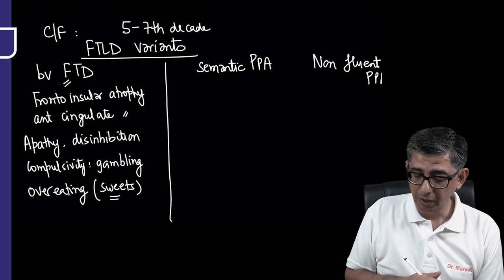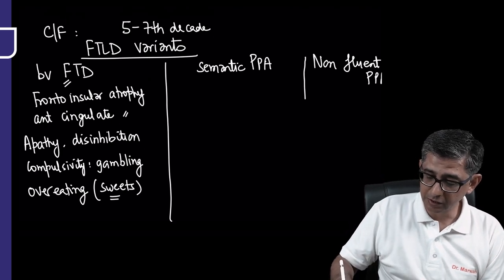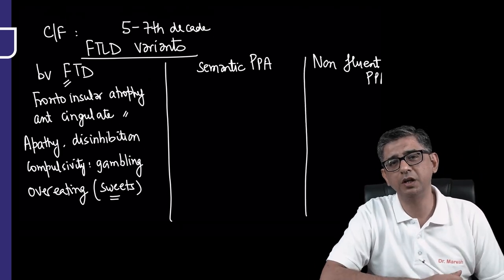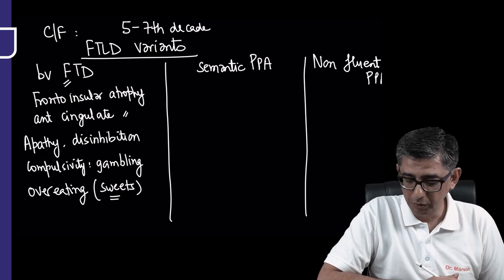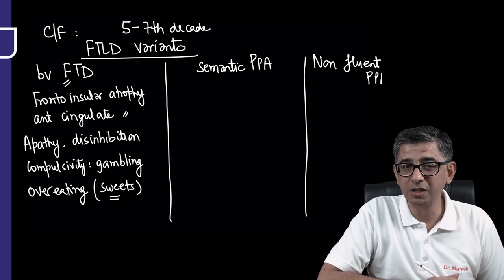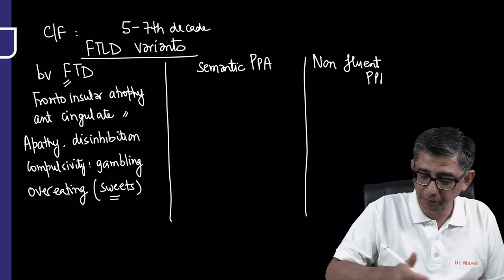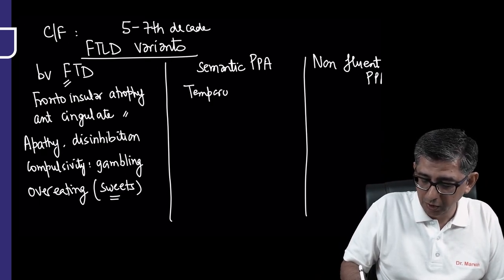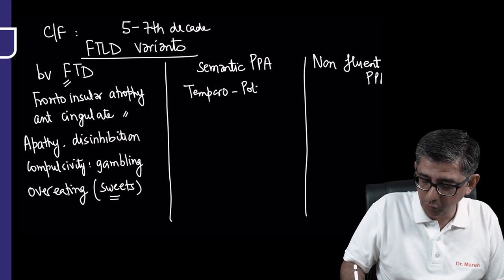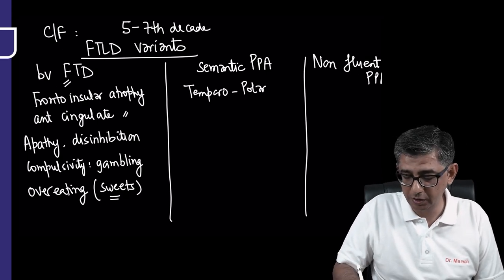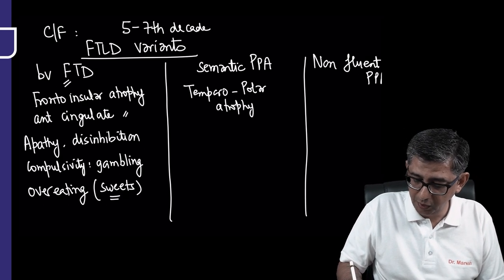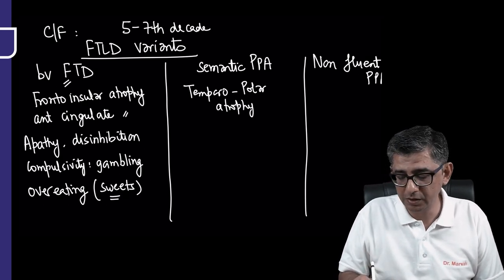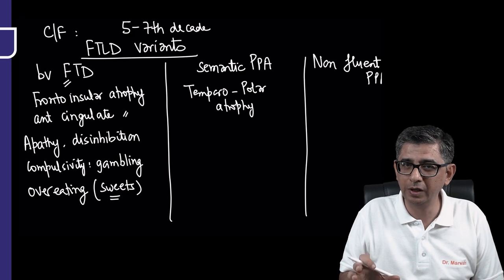As far as the semantic variety is concerned, the semantic word basically means general knowledge. Semantic primary progressive aphasia implies that the part of the brain predominantly involved is the temporal lobe - mostly the temporopolar area exhibiting atrophy.